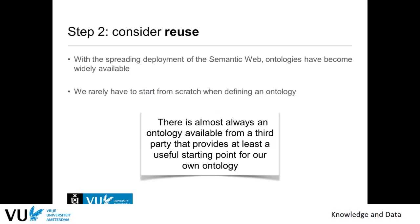There are many ontologies already out there. In our example, we have GeoNames and DBpedia, which has countries, cities, and possible land or sea connections. There is almost always a third-party ontology useful as a starting point — you might start with three existing ontologies and then add your own classes useful for your specific application, such as route planning.